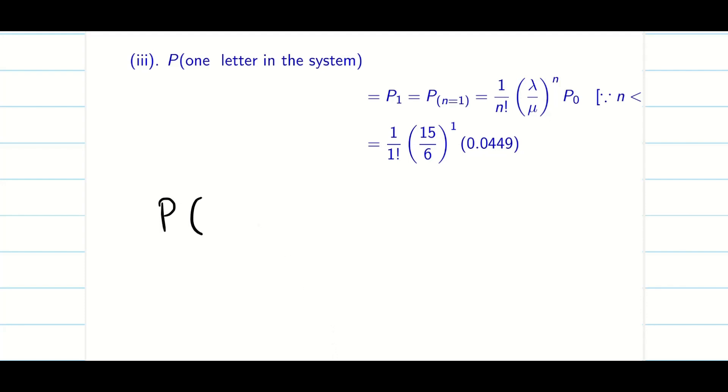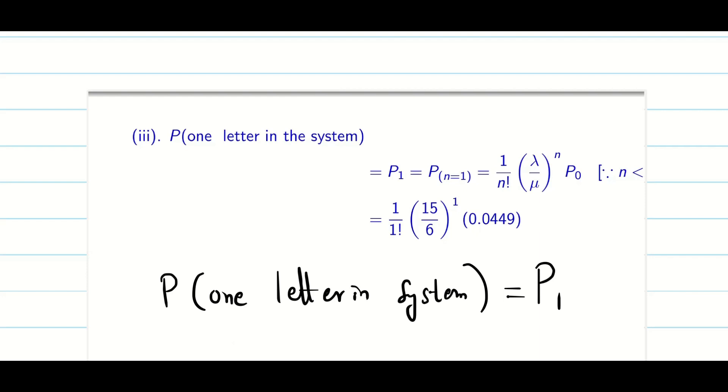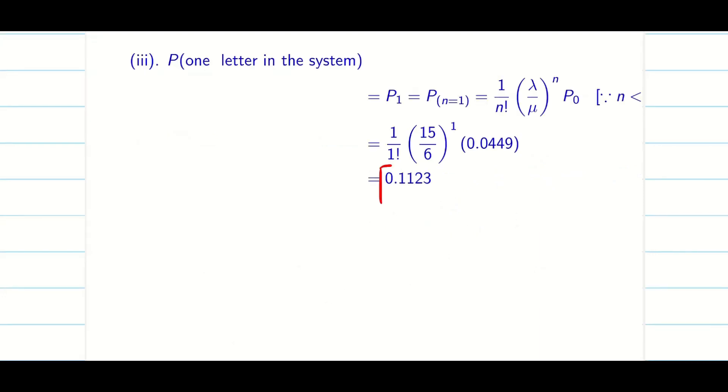The next question asked to us is what is the probability of only one letter in the system? That means it is going to be capital P₁. Do you remember guys? We have the formula for Pₙ, it is split into 2. The first one is going to be rho power n into capital P₀ divided by n factorial when n is less than s. The second one is rho power n into capital P₀ divided by s factorial into s power n minus s when n is greater than or equal to s. So now here my n, that is only 1. Here n equals 1 but s equals 3, so therefore n is less than s. I am going to use the formula rho power n P₀ divided by n factorial. When you substitute and simplify, I will be getting the answer 0.1123.